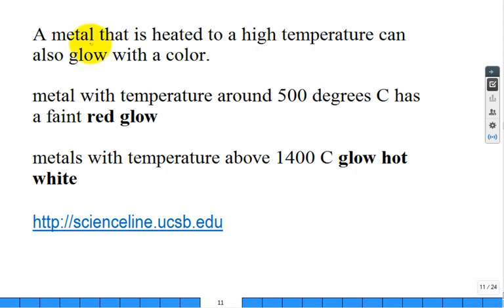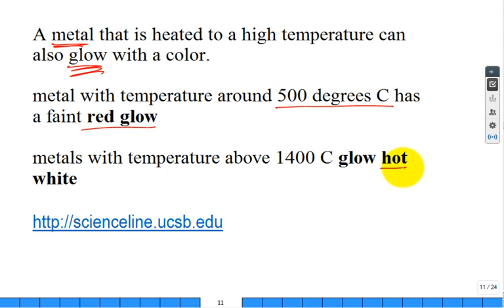If you heat a metal high enough, it can start to glow. Around 500°C you get a red glow. If you continue heating beyond red, it can go white — like the sun or like welding — which is why welders need eye protection with a mask. The emission shifts into the full visible spectrum, producing white light.